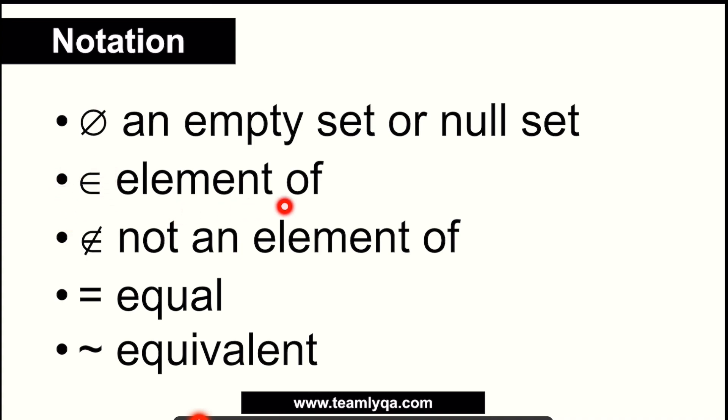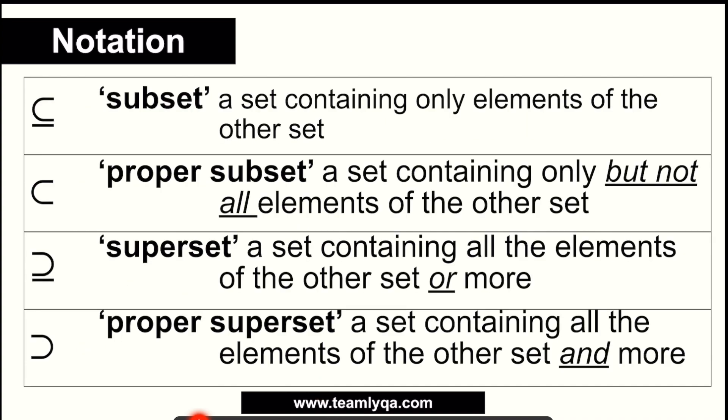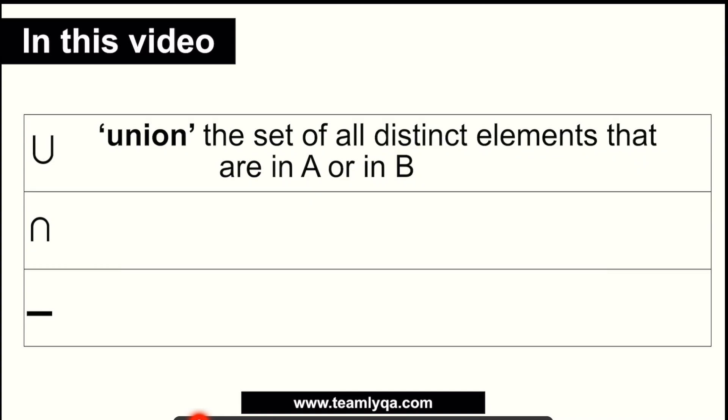So if the set A are these emojis, this is how we write it. And we have the notations that we talked about. This is an empty or a null set. That's the set with no elements. This right here is an element of. If it's not an element, it has a slash. Equal means the same quantity and the same contents. Equivalent means the same number of contents in both sets.